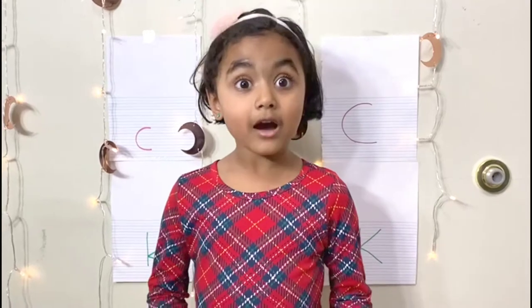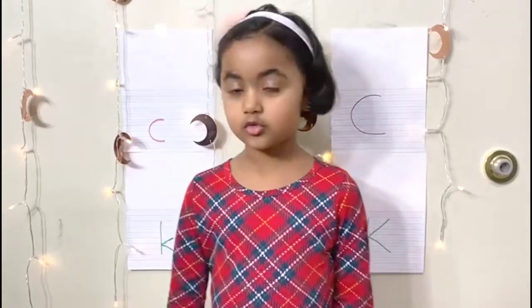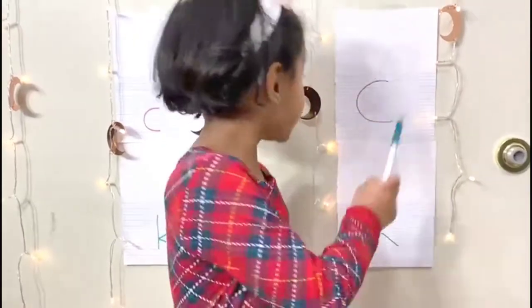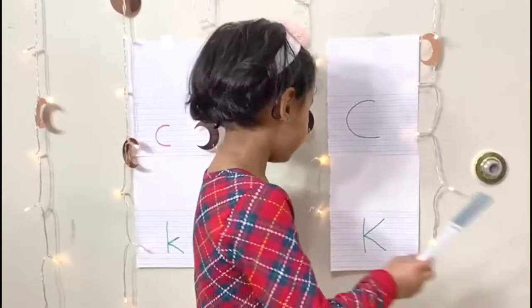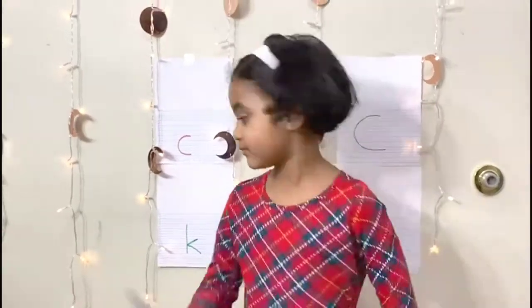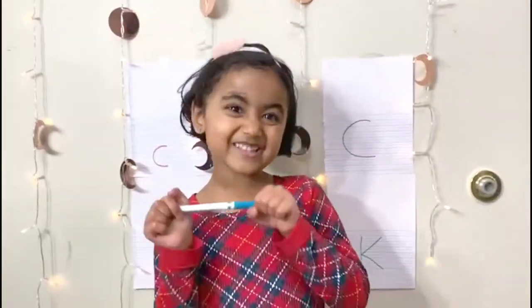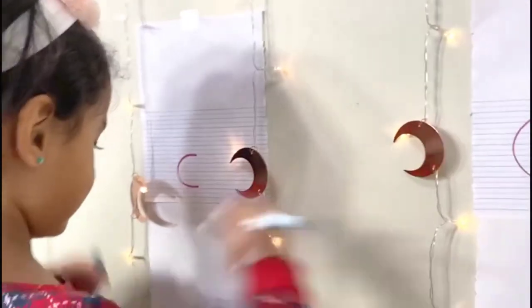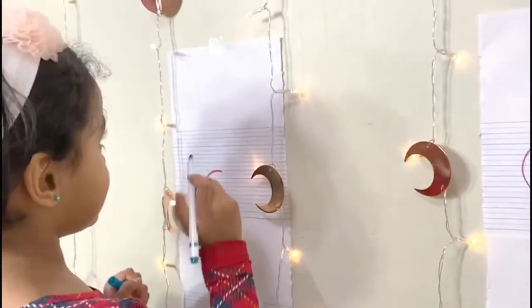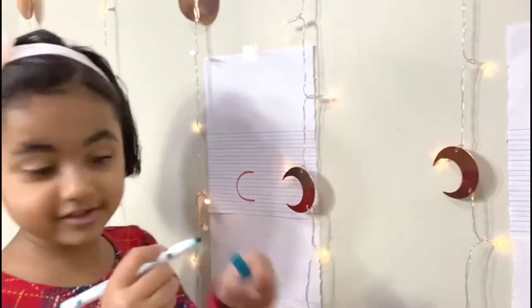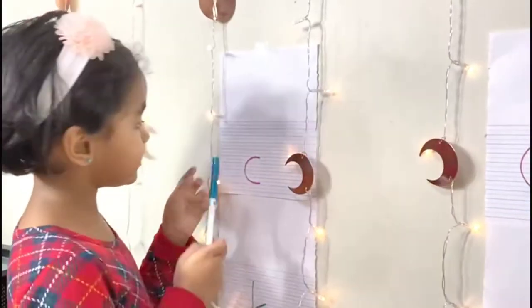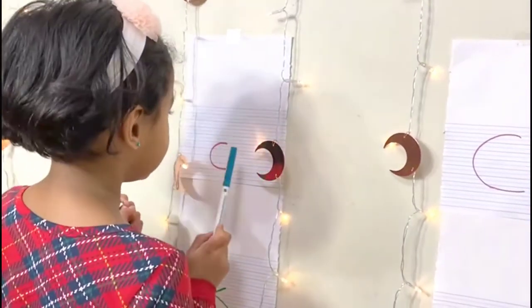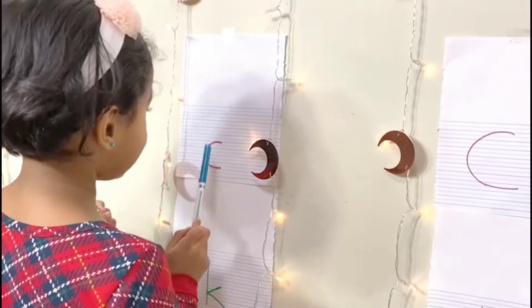Now let's learn how to write small c, big C, big K, and small k. Let's go. So first, let's start with small c. Let's go.